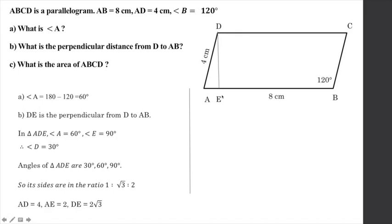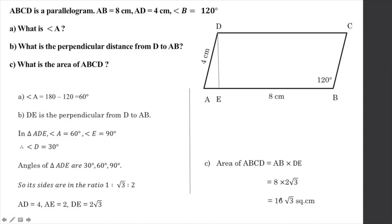Therefore, the perpendicular distance from D to AB is 2 root 3. The area of parallelogram ABCD equals base times height, which gives us the area as 1 square centimeter using the calculated values.